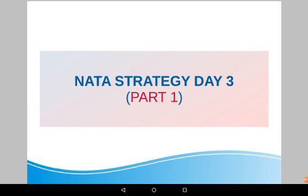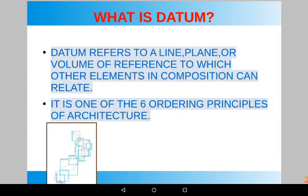There was a doubt from an audience member about what is datum. In some questions from previous NATA exams, to choose the most appropriate words relating to an image, they included the word datum. So what is datum? Datum refers to a line, plane, or volume of reference to which other elements in a composition can relate. It is one of the six ordering principles of architecture. It organizes a random pattern of elements through its regularity, continuity, and constant presence — it ties together or anchors all elements of design. Visual continuity is necessary to establish a datum.